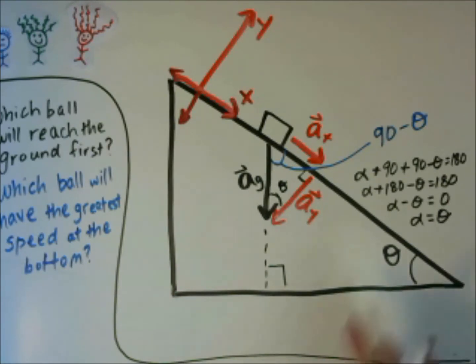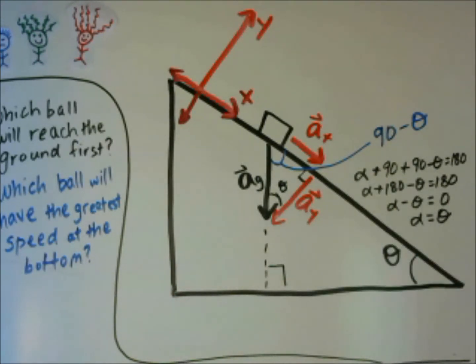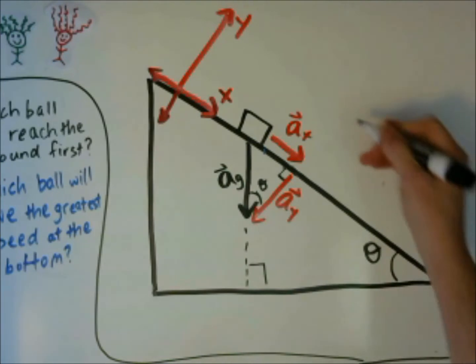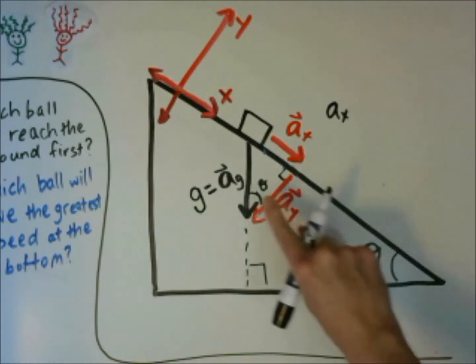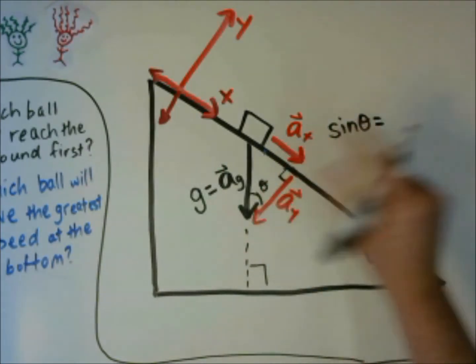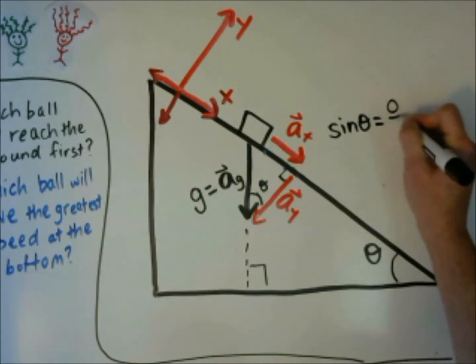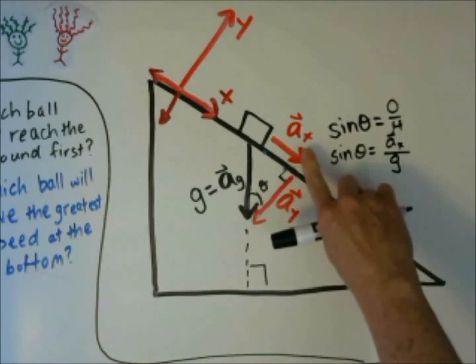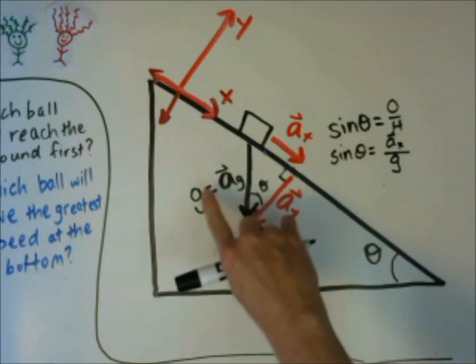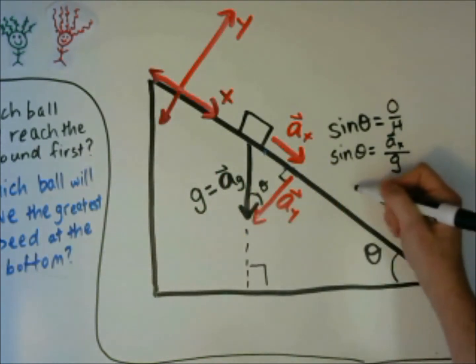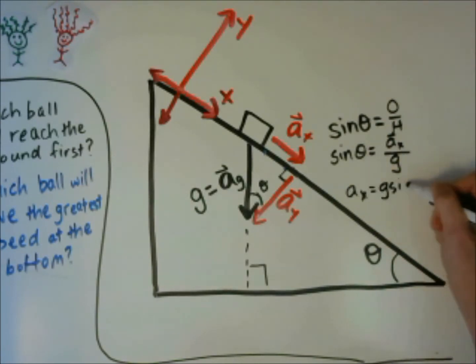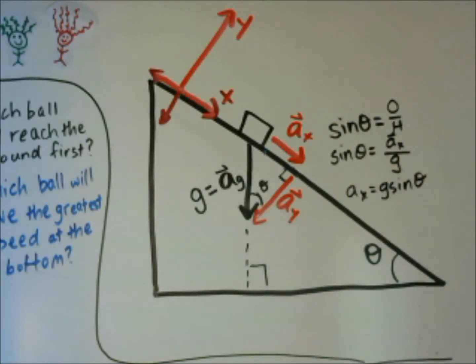We're going to use that to come up with our acceleration in the x direction. So we're looking for a_x, overall acceleration is equal to g, and we're going to use our sine rule. Sine of theta is opposite over hypotenuse. Sine of theta is a_x over the hypotenuse, which is g. And we can solve for a_x. So for this example, the acceleration in the x direction is equal to g sine theta.